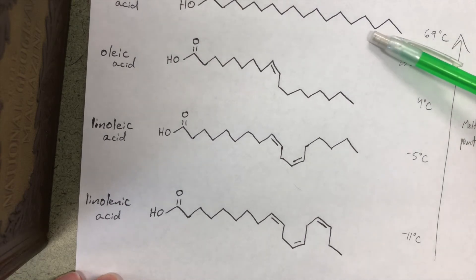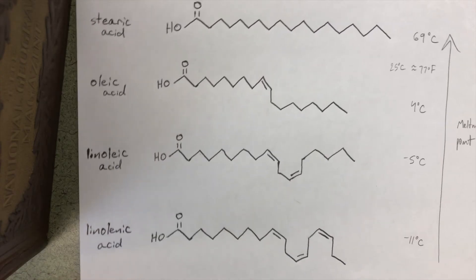Only the saturated fat will still be a solid. And so that explains why things like butter and animal fat, the saturated fats remain solid at room temperature and your vegetable oils, your unsaturated fats, are liquid by the time we get to room temperature.